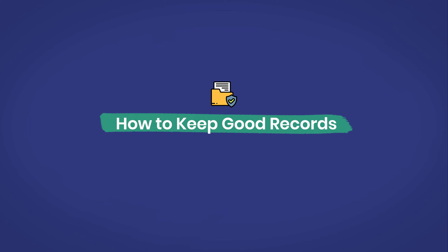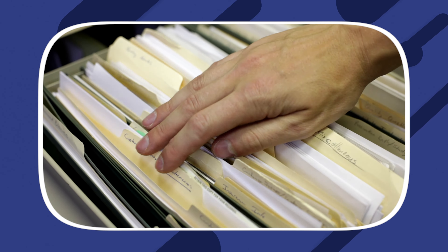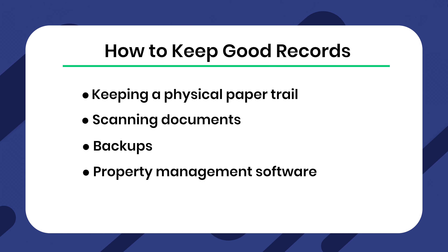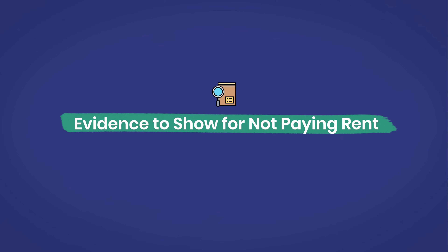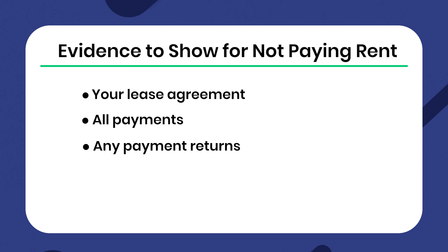If the tenant disagrees with the eviction and replies to the court, it's important to keep extremely good records of everything so you can provide proof to the judge and win your case. This can make or break your entire eviction request in the event of a dispute. You can stay organized by keeping a physical paper trail, scanning documents, creating backups, and using property management software. If the tenant disputes a non-payment claim, show the judge your lease agreement, all payments, all payment returns, and all messages.